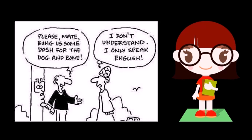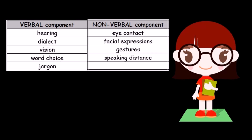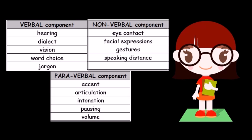There are some components influencing the comprehension of World Englishes speakers. First, there are verbal components such as hearing, dialect, vision, word choice and jargon. Then, there are non-verbal components such as eye contact, facial expressions, gestures and speaking distance. Lastly, the paraverbal components such as accent, articulation, intonation, pacing and volume also affect the understanding of communication. All of those components are influenced by the region, culture, social class and more of one's speech community.